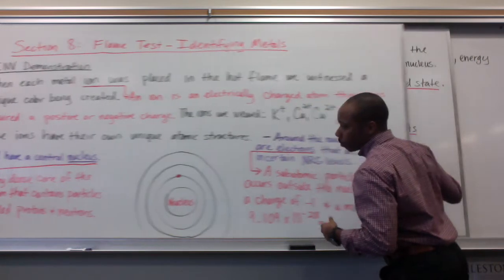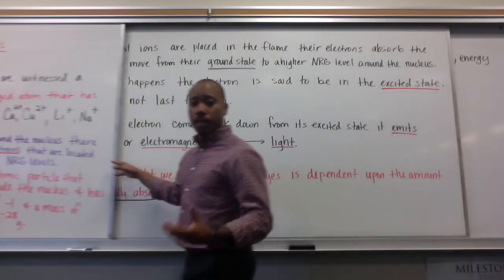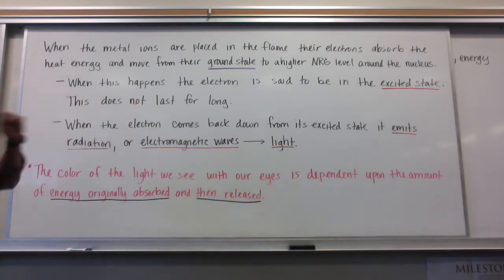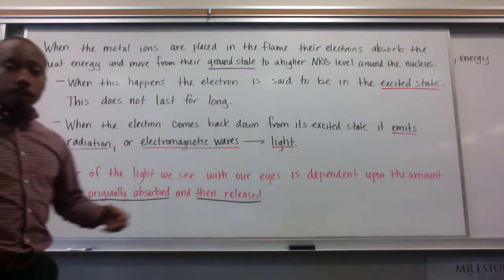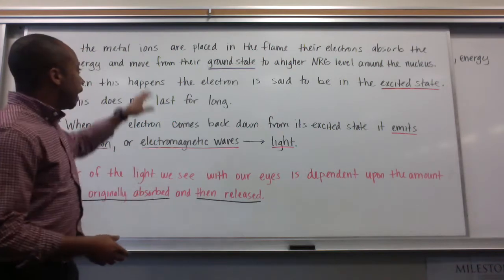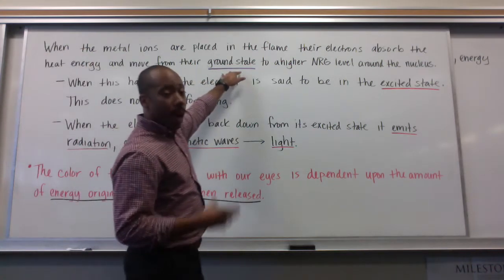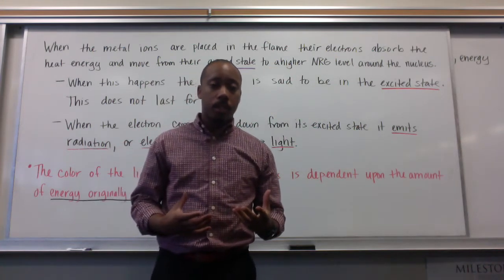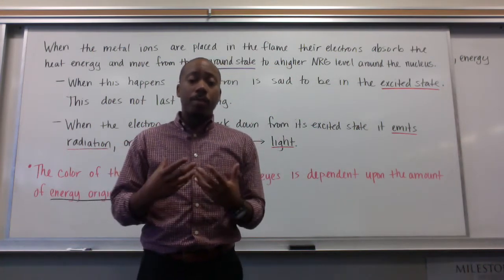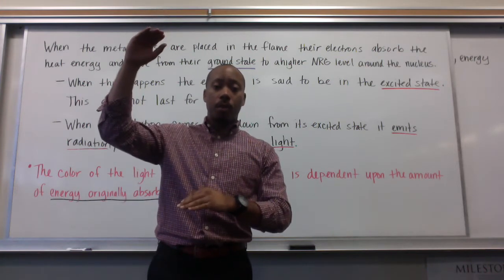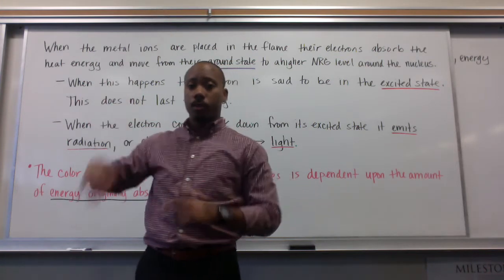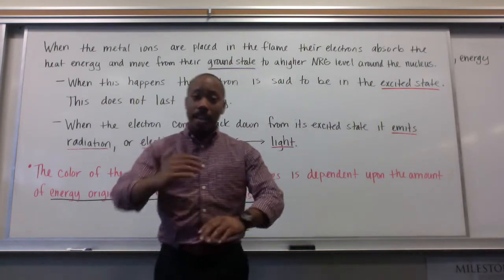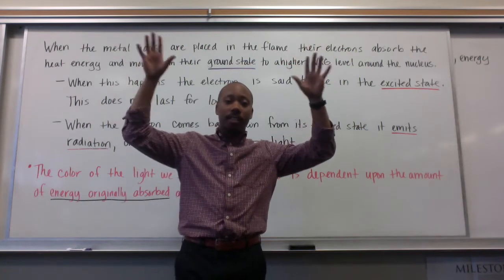Let's talk about what happens as we put these ions into the heat. When these metal ions are placed into the flame, their electrons absorb the heat energy. They move from their original ground state to a higher energy level around the nucleus — they absorb energy, and that energy makes them go to a higher energy level. When this happens, the electron is said to be in the excited state. Think of an electron gaining energy and being excited — going crazy up there.